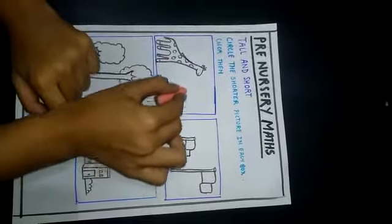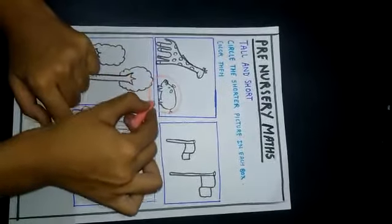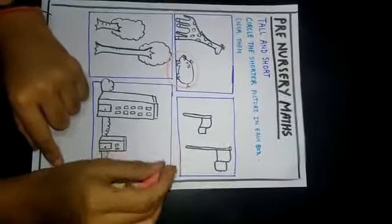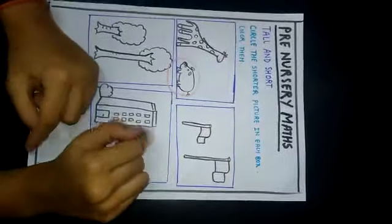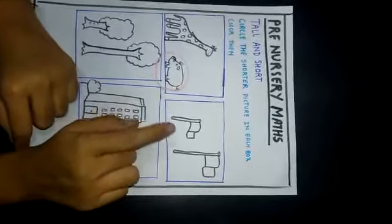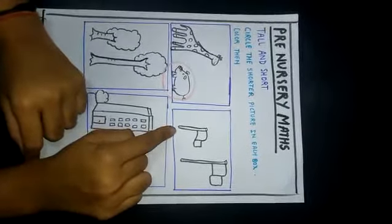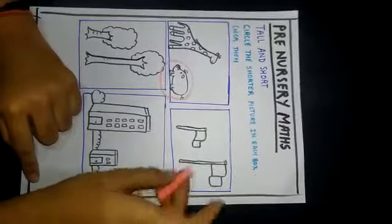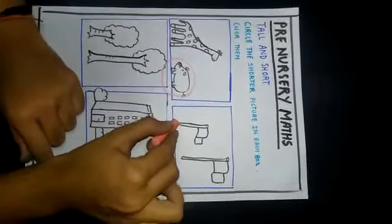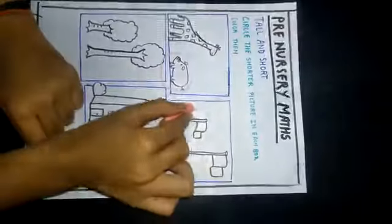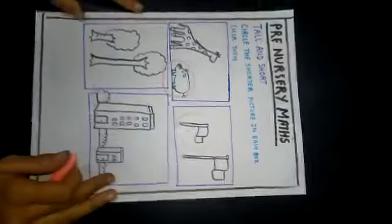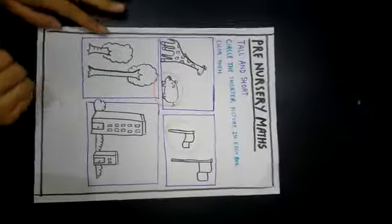Here are two flags. This flag is smaller than this flag, so let's circle the shortest flag.